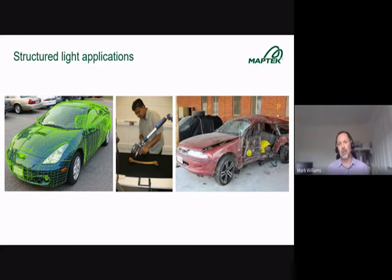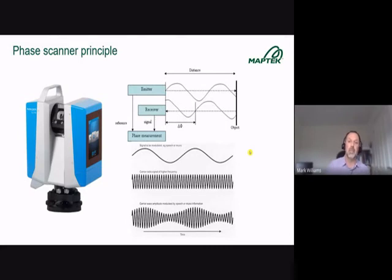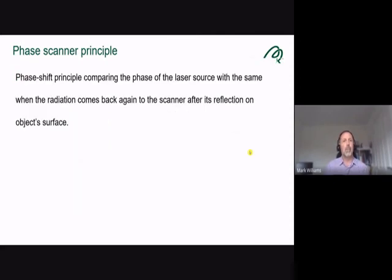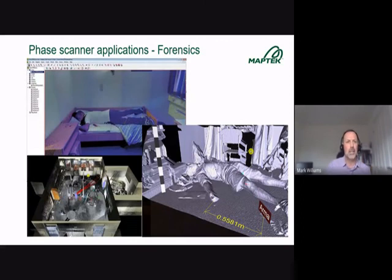Secondly, there are phase scanners. Phase scanners work differently — they emit a pulse which hits an item and is returned, and the change in phase is measured, then an algorithm derives distance from that. Prime examples of use are forensic investigations and very detailed scanning. Phase scanners offer exceptionally high detail, but have a limited range.